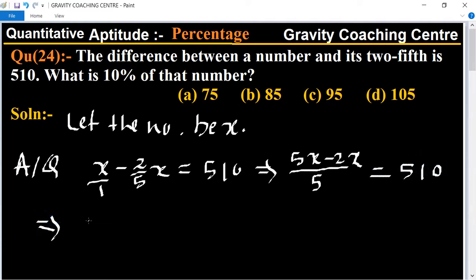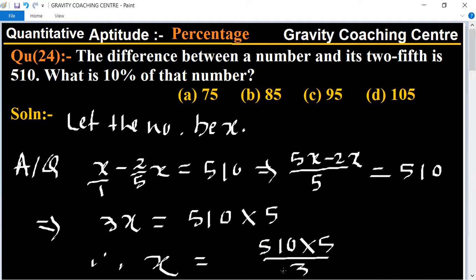After subtracting, 3x equals 510 multiplied by 5. Therefore x equals 510 multiplied by 5 divided by 3. Using the table of 3, 17 times 3 is 51, so we get 850.